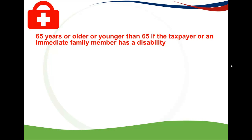This portion of the medical tax credit discusses when a person is 65 years or older, or if a person is younger than 65 but the taxpayer or an immediate family member has a disability. Remember in Part 1 we looked at younger than 65 years of age with no person having a disability.